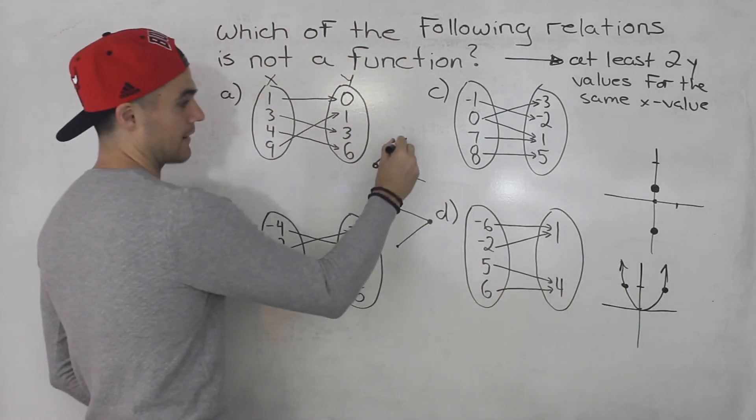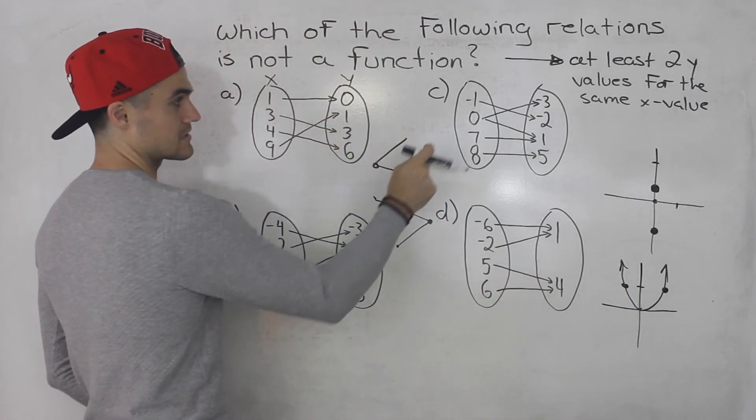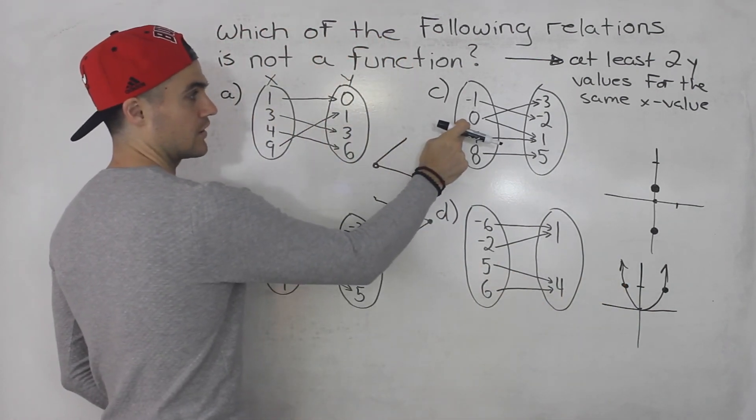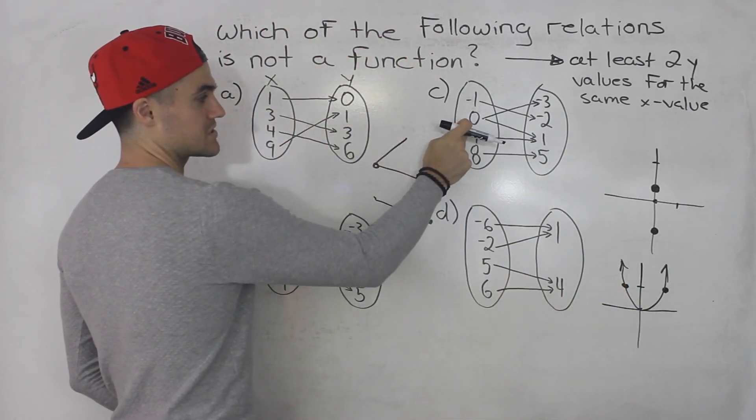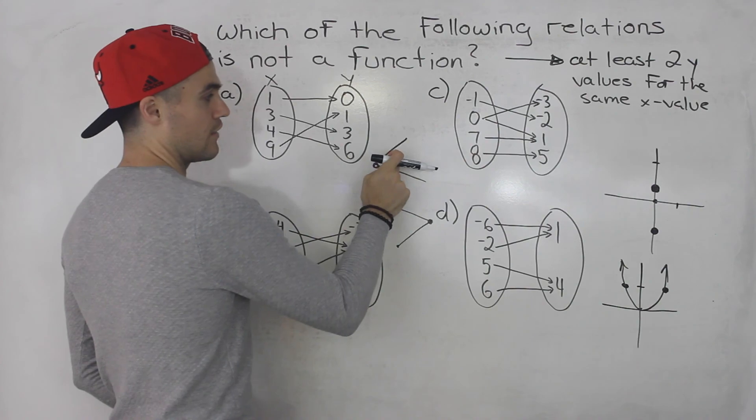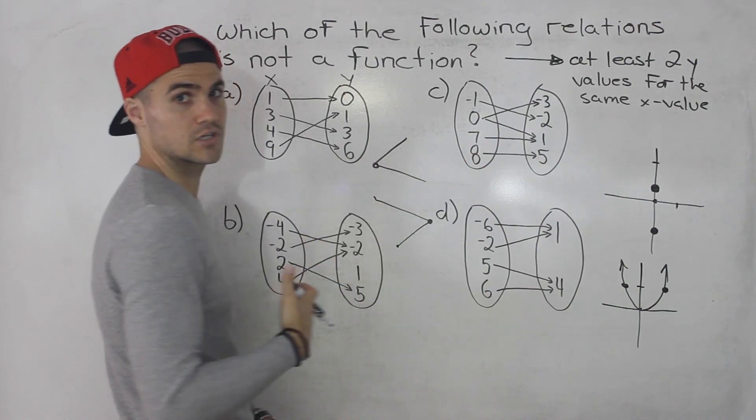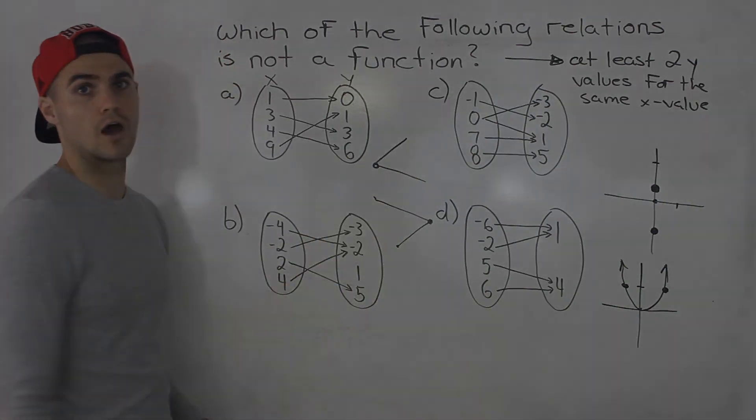But if you see a pattern like the one in part C — where a single x value maps to multiple y values — then the relation is not a function.